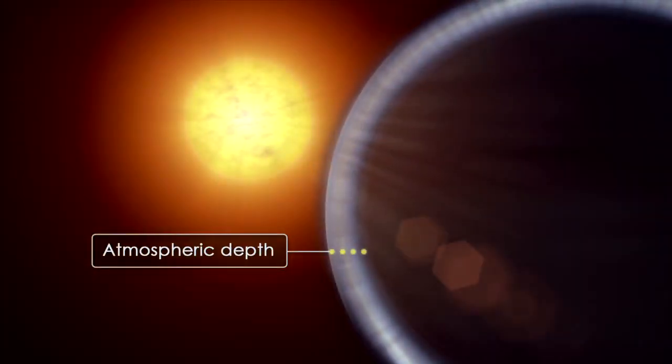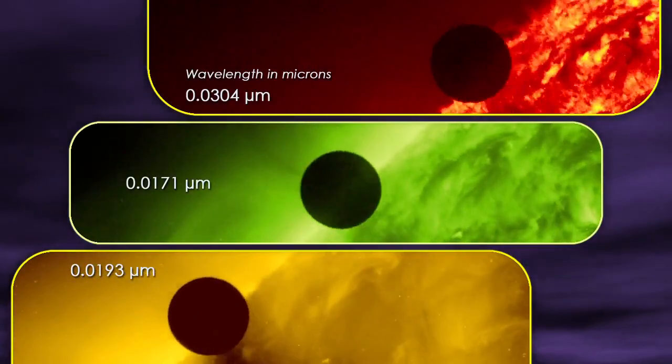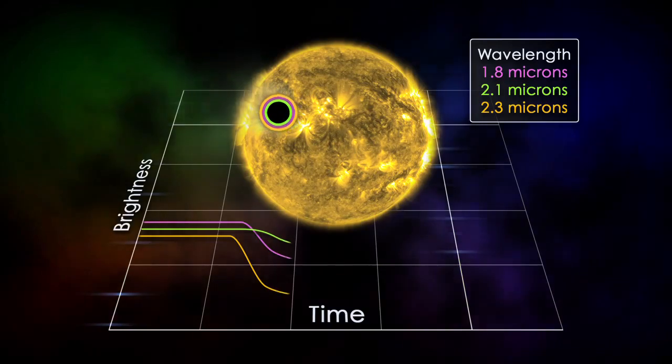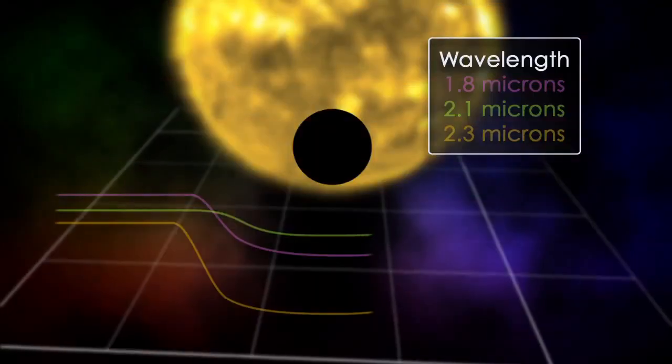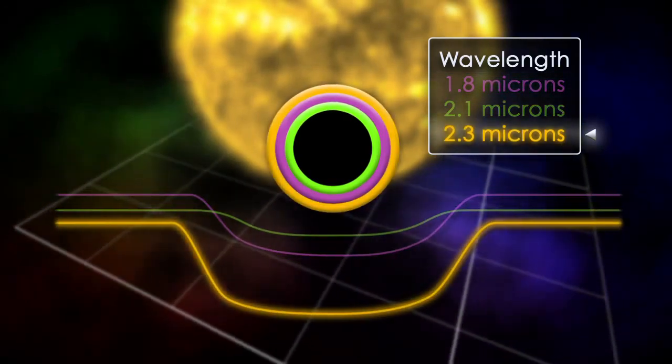Knowing the depth and density of the atmosphere is also important. To figure this out, astronomers observe the transit at many different wavelengths. At wavelengths where more absorption occurs, the planet will appear larger, with the change in size indicating how deeply the atmosphere extends and its density at different altitudes.